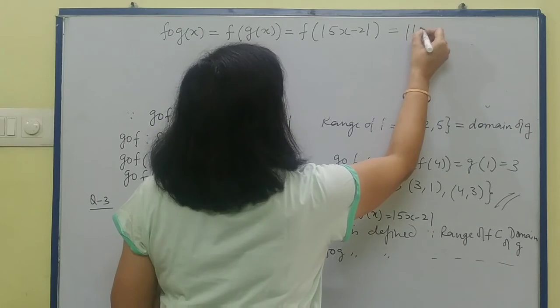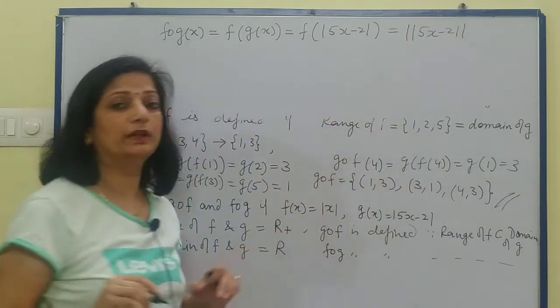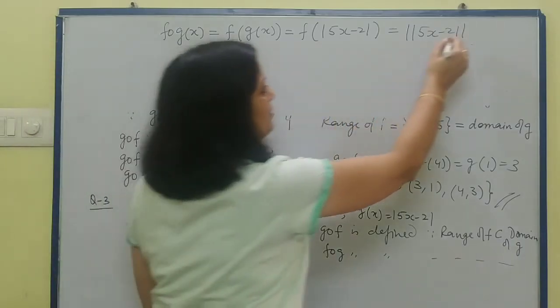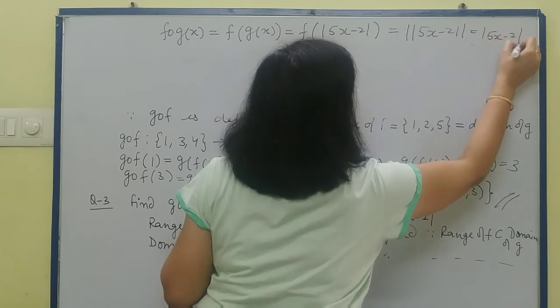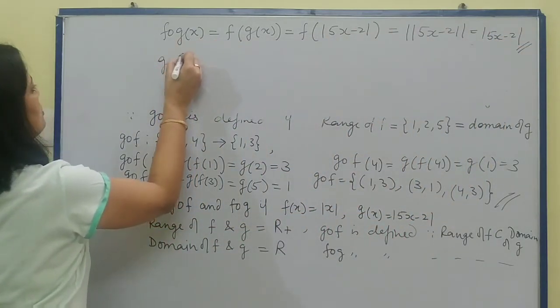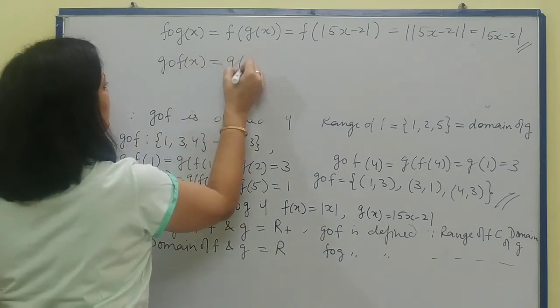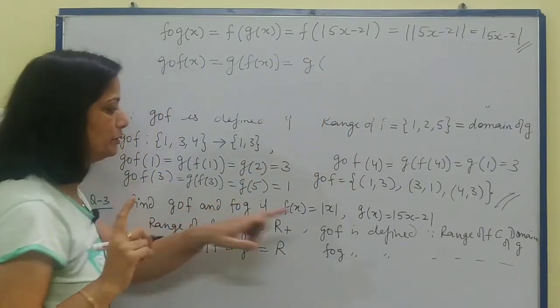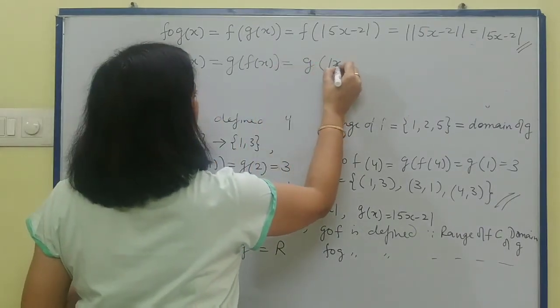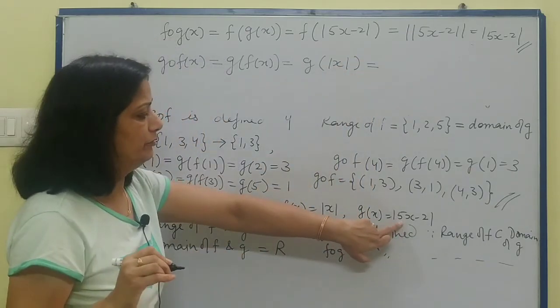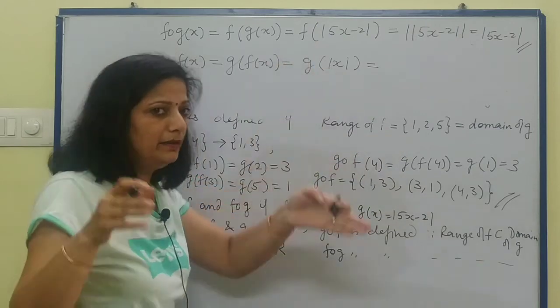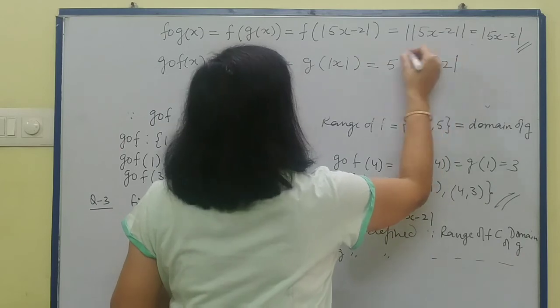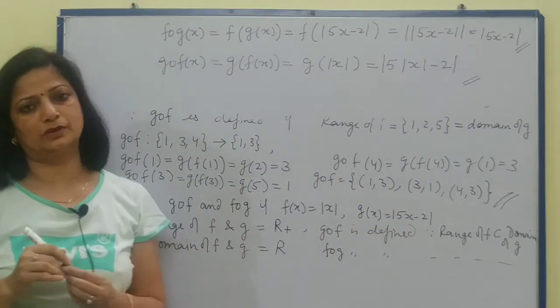Now we need to find g composite f. For this, what will we do? g of f(x). Now g of - first what to put? f(x), what is f(x)? f(x) is mod x. What does g do? 5 times of that element minus 2, and then mod. That means 5 times mod x minus 2, complete mod. This is your answer.